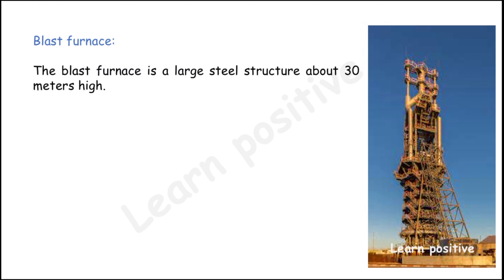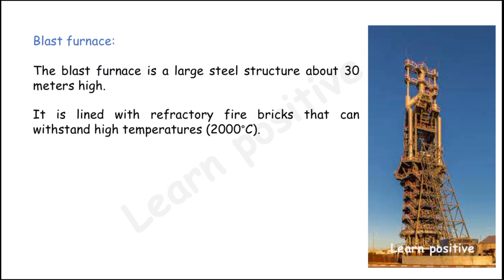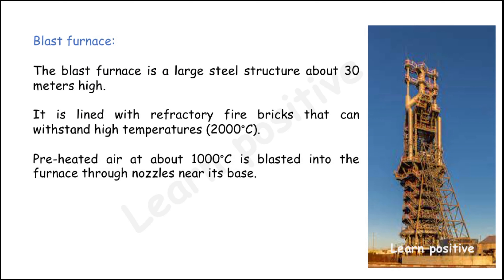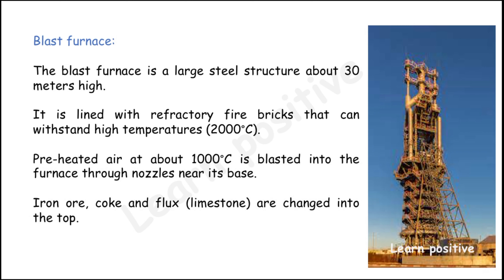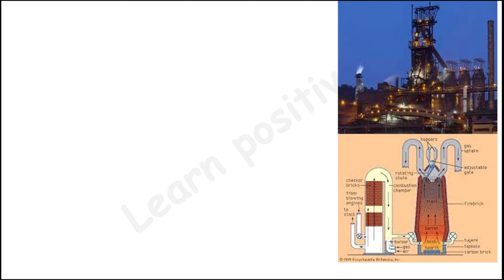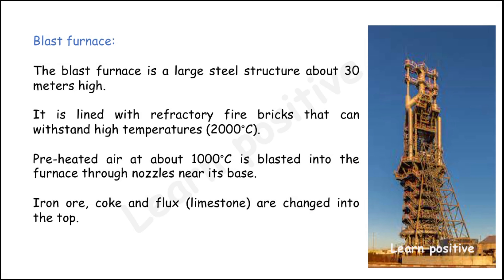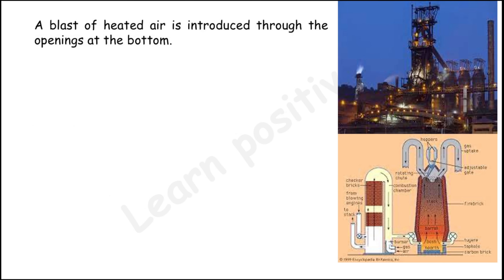The blast furnace is a large steel structure about 30 meters in height, lined with refractory fire bricks that can withstand up to 2000 degrees Celsius. Preheated air at about 1000 degrees Celsius is blasted into the furnace through nozzles near its base. The iron ore, coke, and flux — we use limestone as the flux — are charged into the top.